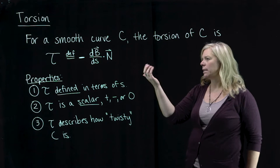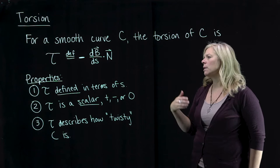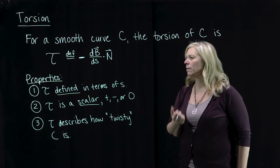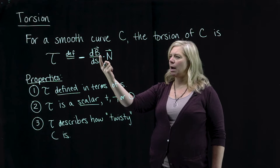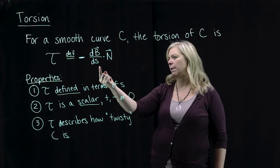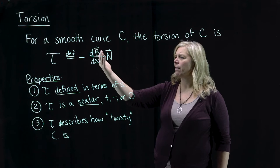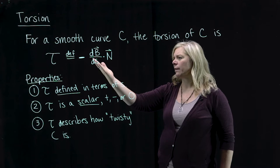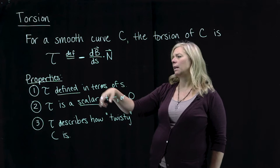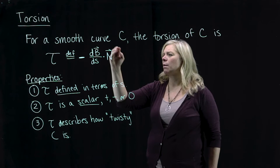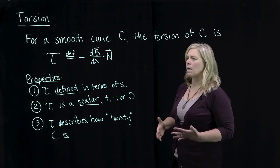Torsion — this is the Greek letter tau, lowercase tau, used for torsion. Torsion is defined this way. We've got our unit binormal vector, and what we have here is the rate of change of that unit binormal vector with respect to arc length. We've got our unit normal vector n, and we have a dot product between those two things. The derivative of a vector function with respect to s dotted with another vector gives you a scalar, which could be positive, negative, or zero. The minus sign out front will change the sign on whatever comes from that dot product.